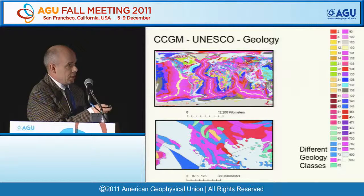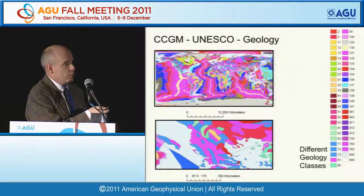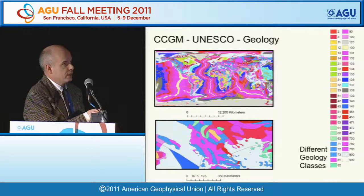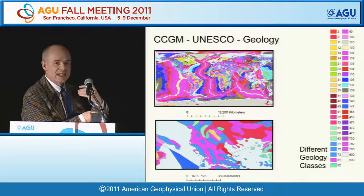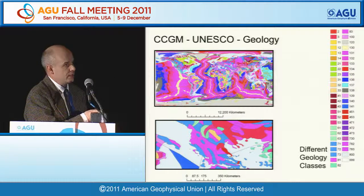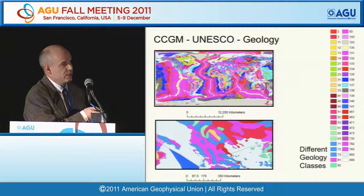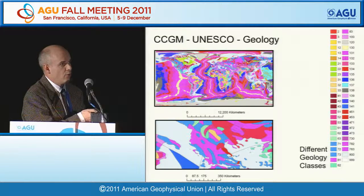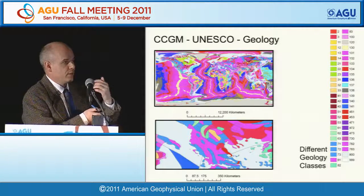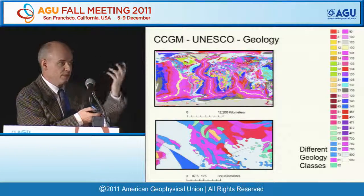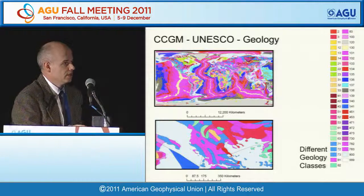The first geology dataset used is the CCGM geology with 51 classes, shown on a global map. Zooming in on Greece, we see the level of detail—about 14,000 polygons in this dataset.